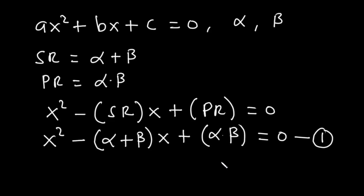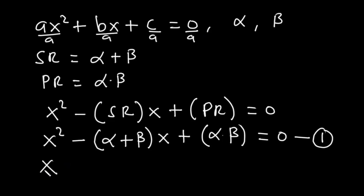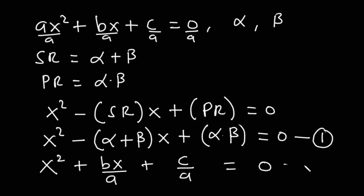From equation one, it is obvious that the coefficient of the x squared term is one. Now, let's consider the general quadratic equation: ax squared plus bx plus c is equal to zero. Realize that the coefficient of the x squared term is a. In order to make the coefficient of the x squared term equal to one, we need to divide through by a. So, as we divide through by a, we have x squared plus bx over a plus c over a is equal to zero. Let's call this equation two.